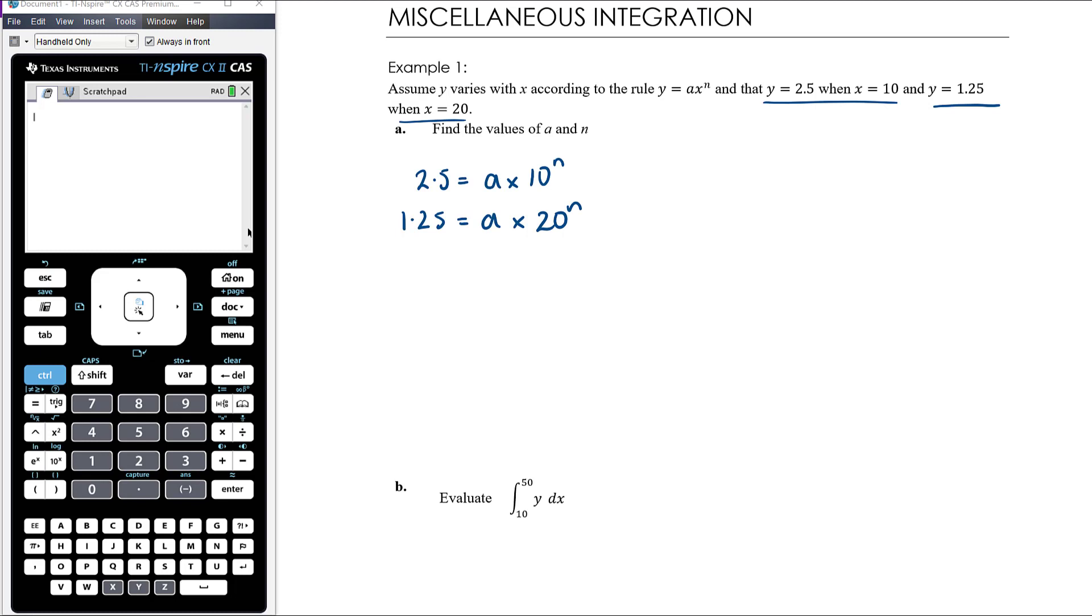We've got simultaneous equations to solve. The easiest way to solve equations of this form would be to divide equation 1 and equation 2 because that would eliminate a.